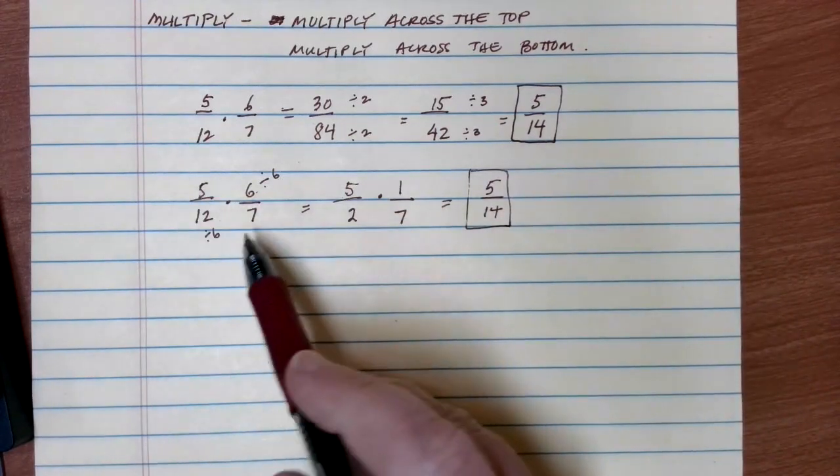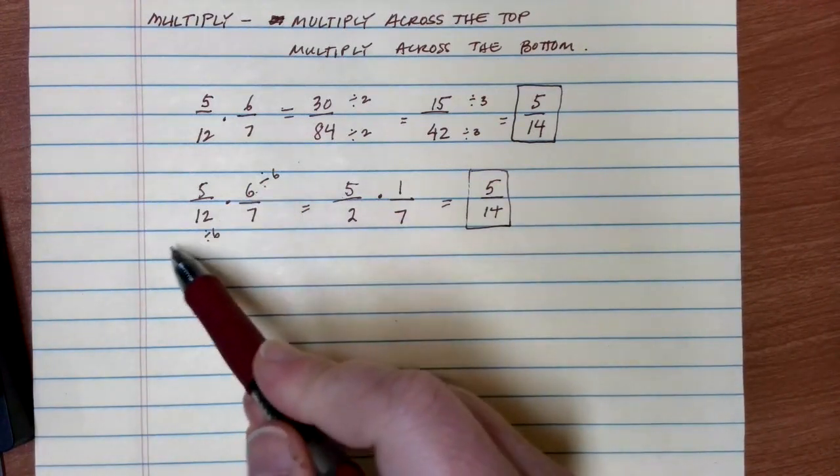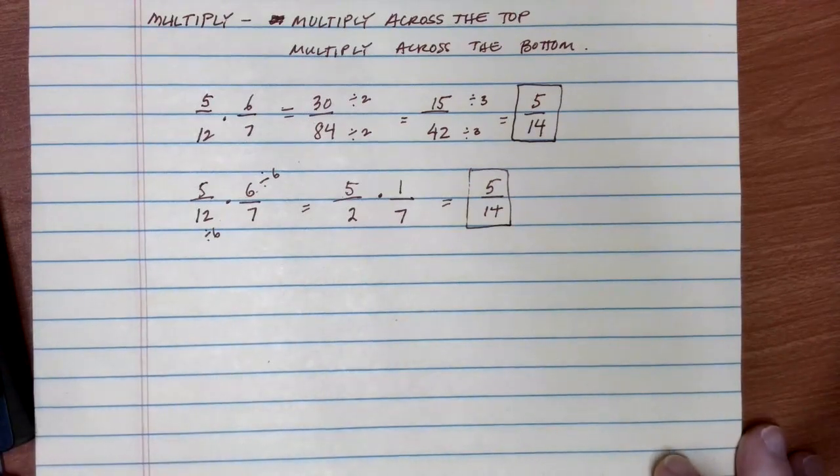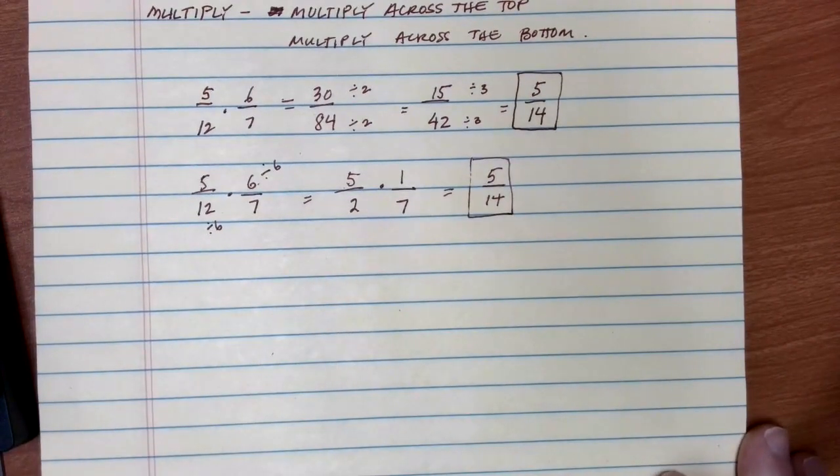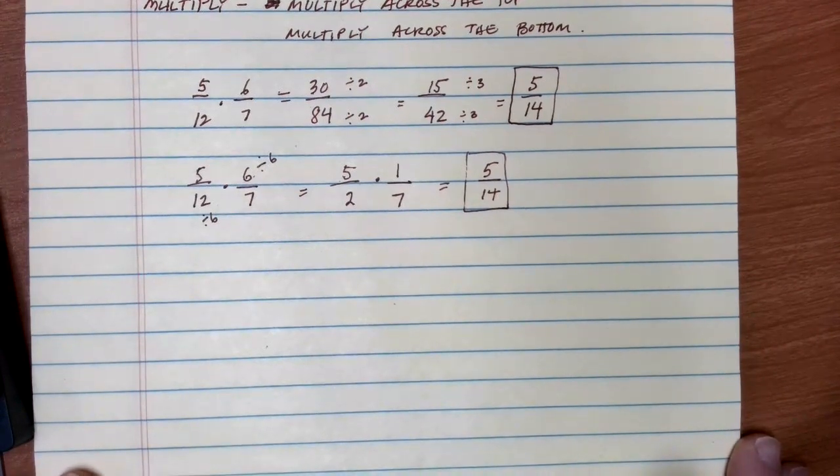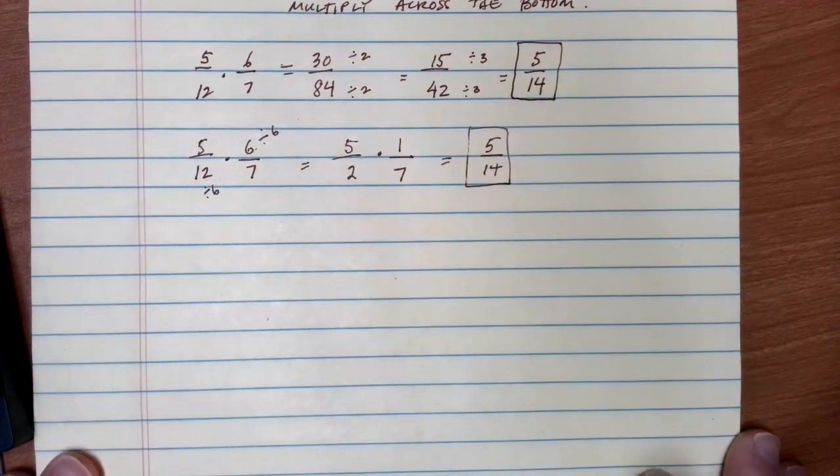Sometimes you'll have heard this called canceling. Sometimes you'll just cross those out and write numbers next to them. If that's something you're familiar with, go for it. Otherwise, I really like to pay attention to what I'm dividing the top and the bottom by to make my values as simple as possible. So that's really all the process that there is to multiplying with fractions.